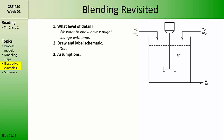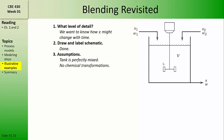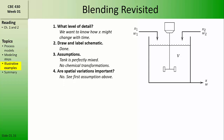Next, we need to list assumptions. In this case, we'll assume that the tank is perfectly mixed, because our drawing of the tank has a mixer, and that there are no chemical transformations or chemical reactions occurring. Next, we'll ask the question: are spatial variations important? The answer is no, because we assumed that the tank is perfectly mixed, so there should be no composition or thermal gradients.